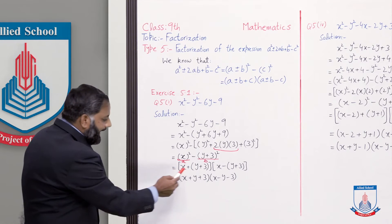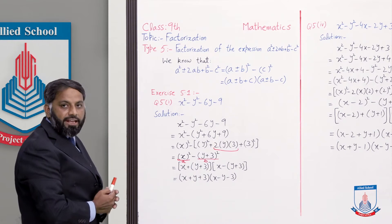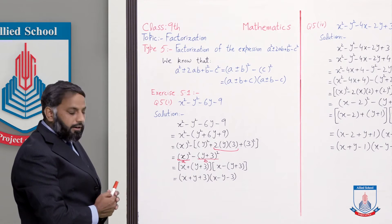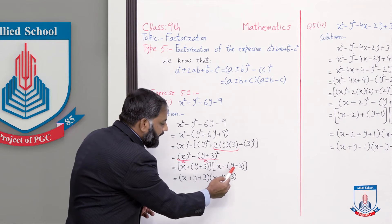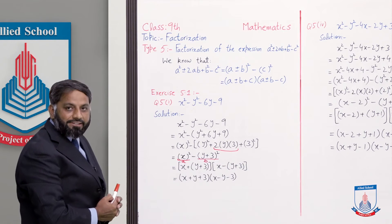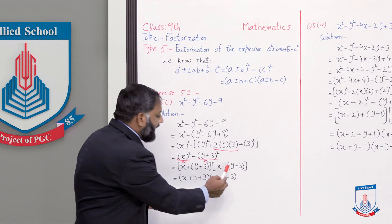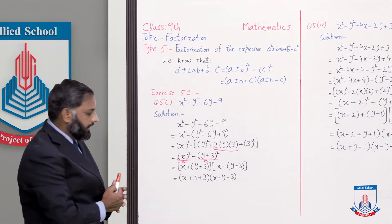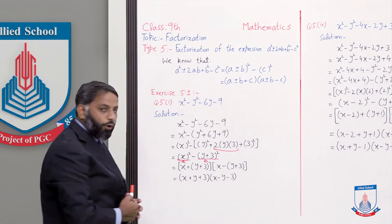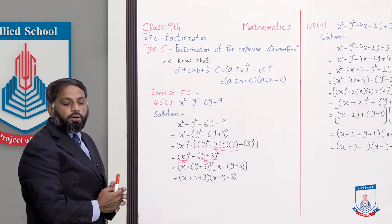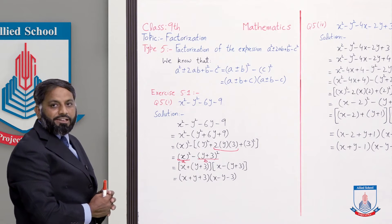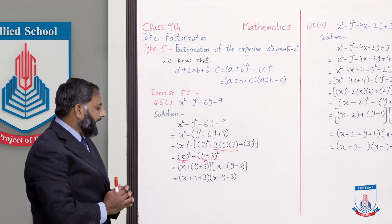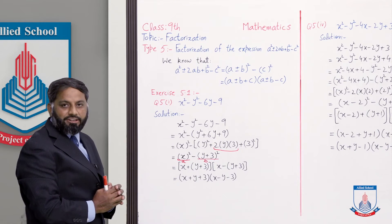Ab a² - b² jo hai: a+b into a-b. Ab yeh bracket open karenge. Is bracket se pehle plus ka sign hai isliye in dono terms ke sign change nahi honge, to yeh aayega x + y + 3. Aur next term mein is bracket se pehle minus ka sign hai isliye bracket ke andar wali dono terms ke sign change ho jaayenge — toh yeh dono signs negative ho gaye. To yeh do factors bane: x + y + 3 and x - y - 3.